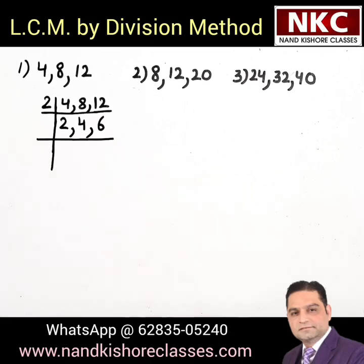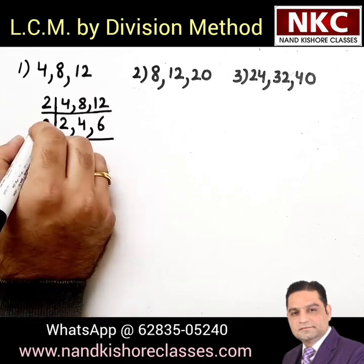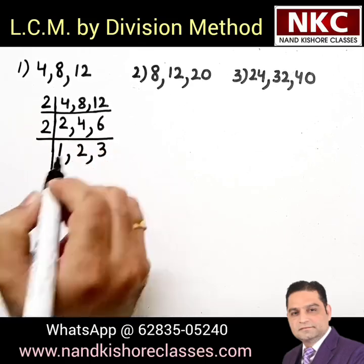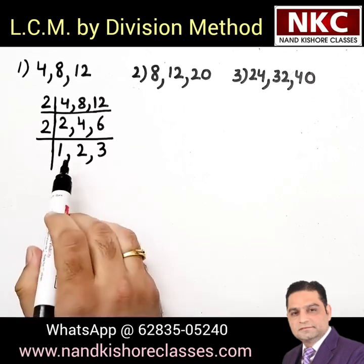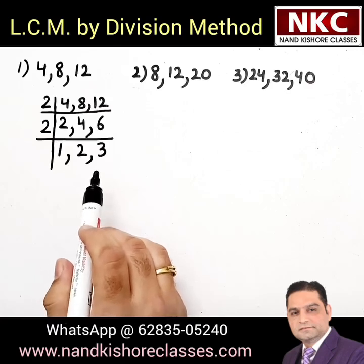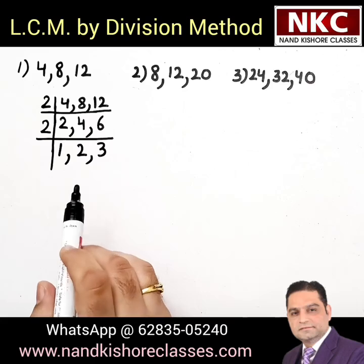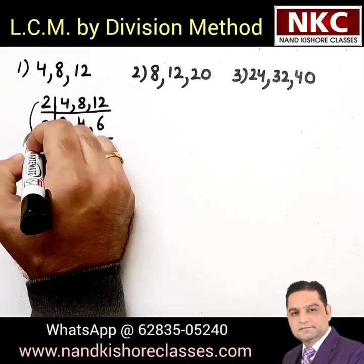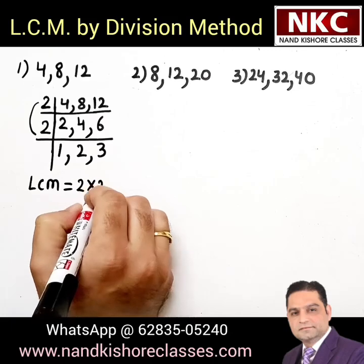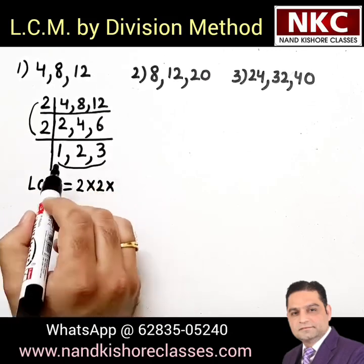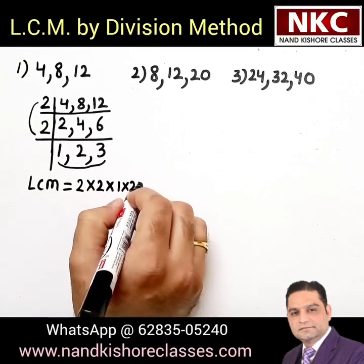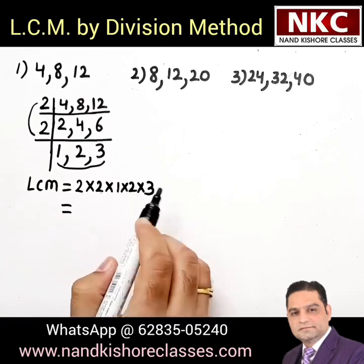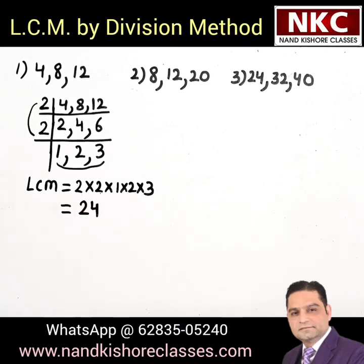Again, 2, 4 and 6 are all divisible by 2, so you can do one more step. Write 2 here. 2 times 1 is 2, 2 times 2 is 4, 2 times 3 is 6. Now 1, 2 and 3 are not divisible by any other number — there is no common divisor for them, so stop here. Your LCM is given by the product of the left values, 2 times 2, and the bottom values 1, 2 and 3. So 2 times 2 is 4, 4 times 1 is 4, 4 times 2 is 8, 8 times 3 is 24. Your LCM is 24.